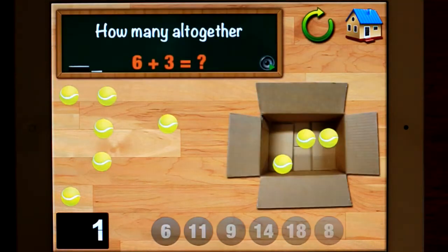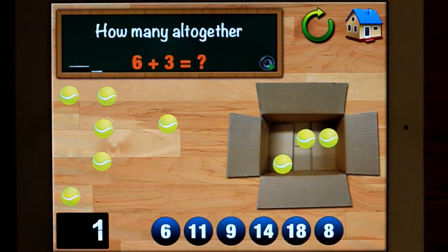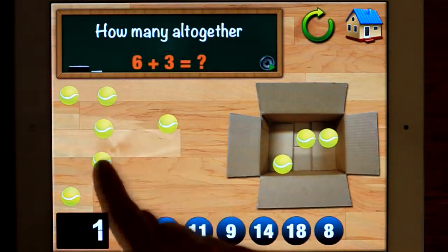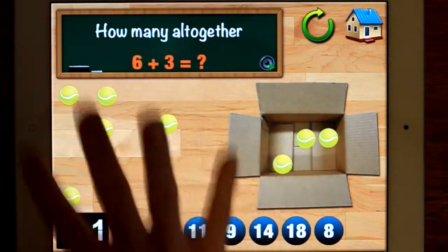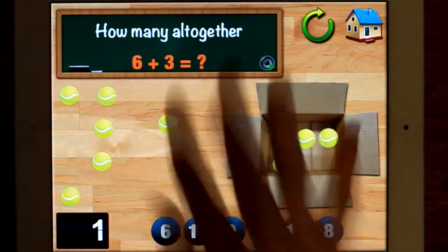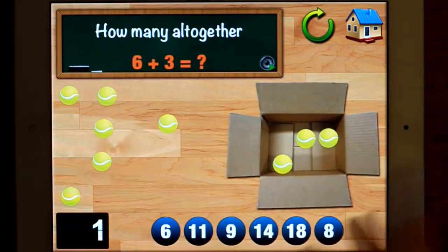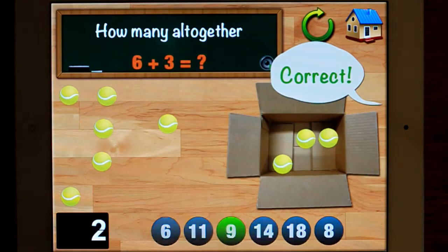Some students may count from one, one, two, three, four, five, six. Although they recognize that's six and that's three. So six, seven, eight, nine. Correct.